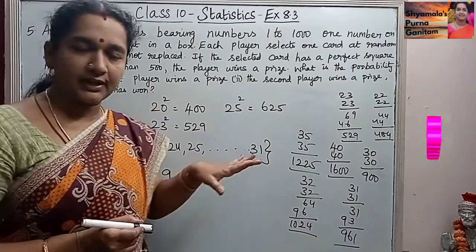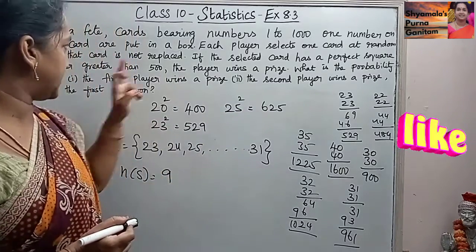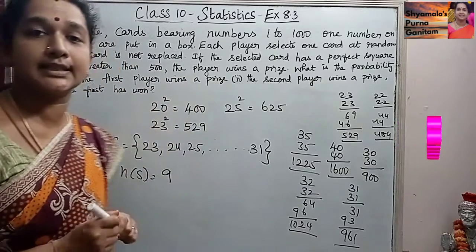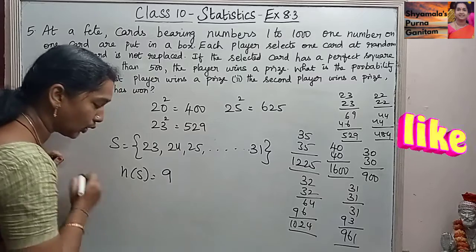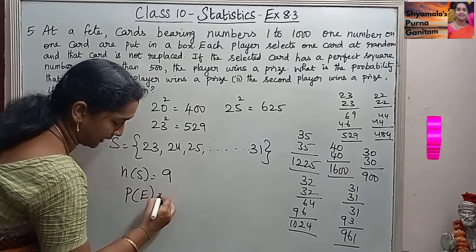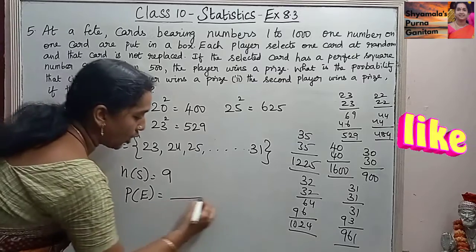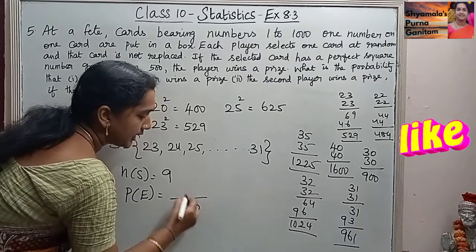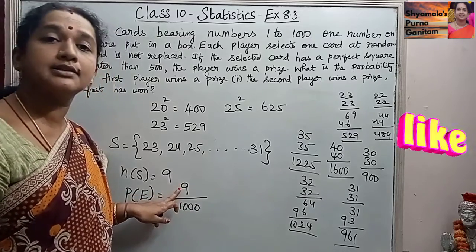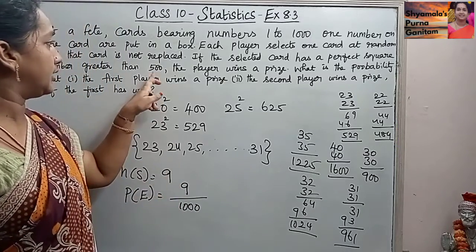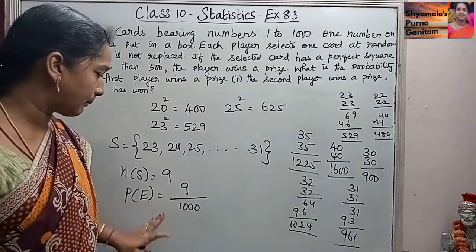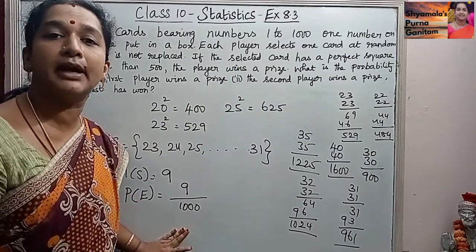So the first question is find the probability that the first player wins a prize. So totally, the probability of winning that prize will be, out of 1000 cards, 9 cards. For the 9 cards, the player will win the prize. So the probability of the event is 9 by 1000. This is the answer for the first one.